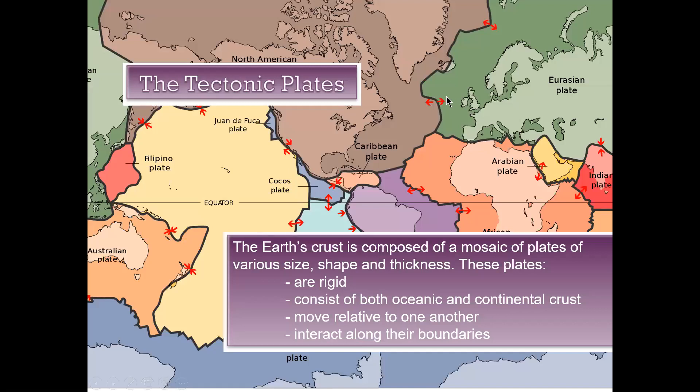Now we'll get into tectonic plates. Earth's crust is composed of a mosaic of plates of various sizes, shapes, and thicknesses. These plates are rigid, since they're on the crust, and consist of both oceanic and continental crusts. They all move relative to each other, and their interactions are really important to understand.